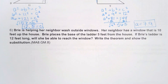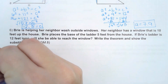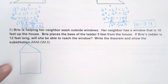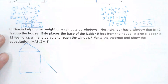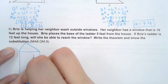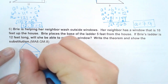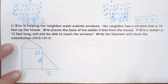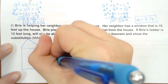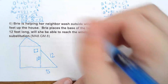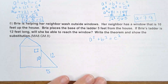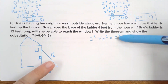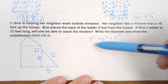Bree is helping her neighbor wash outside windows. Her neighbor has a window that is 10 feet up the house. Bree places the base of the ladder 5 feet from the house. If Bree's ladder is 12 feet long, will she be able to reach the window? I like to draw scenarios for word problems. Here's the house — the window is 10 feet from the bottom, the base of the ladder is 5 feet from the house, and the ladder — our hypotenuse — is 12.